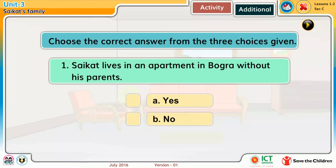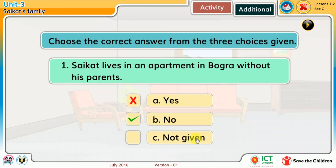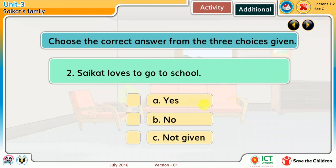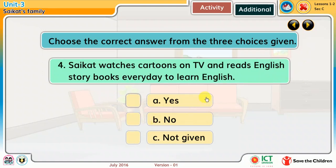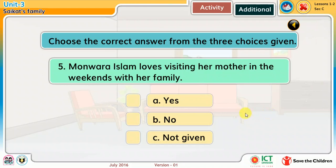Choose the correct answer from the 3 choices given. 1. Shoikot lives in an apartment in Bogura without his parents — No. 2. Shoikot loves to go to school — Not given. 3. Mr. Islam loves listening to music and does not like writing stories — No. 4. Shoikot watches cartoons on TV and reads English story books every day to learn English.